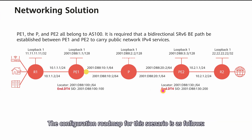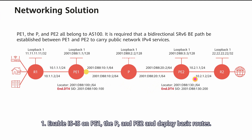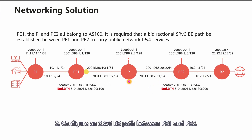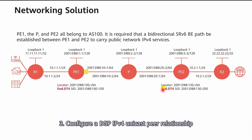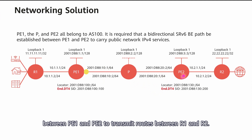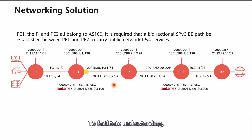The configuration roadmap for this scenario is as follows. First, enable AS100 on PE1, PE2, and deploy basic routes. Second, configure an SRv6BE path between PE1 and PE2. Third, configure a BGP IPv4 unicast peer relationship between PE1 and PE2 to transmit routes between R1 and R2. To facilitate understanding, we'll obtain packet headers on this interface later.